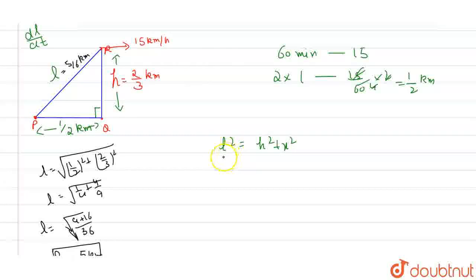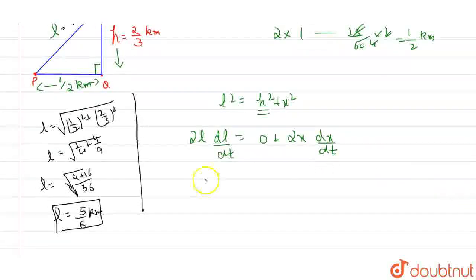So now we have to find dl by dt. Our dl by dt will be, after differentiating with respect to t, it will become 2l dl by dt. This is a constant term h, 2 by 3, so it becomes 0. This will become 2x dx by dt.